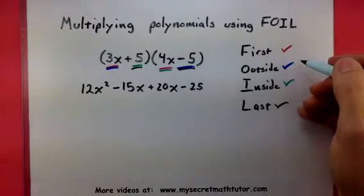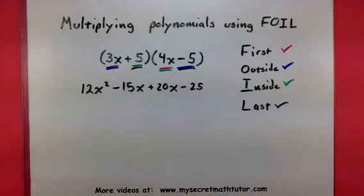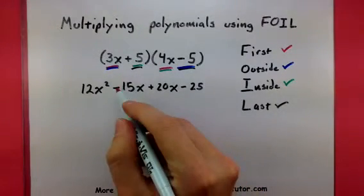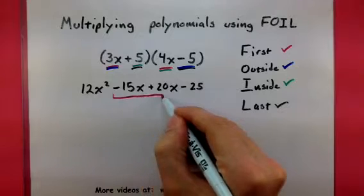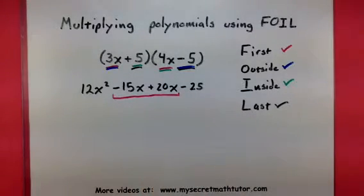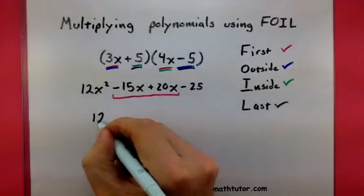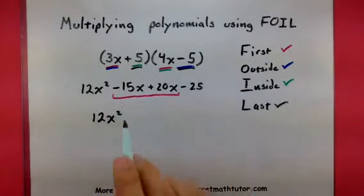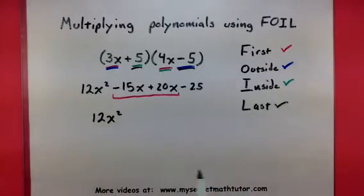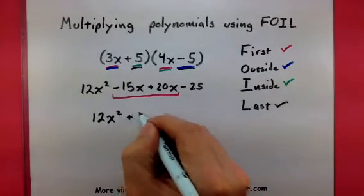Once we've taken care of all of our terms, we need to look at the polynomial and simplify it. Most of the time, the simplifying will come from these two middle terms. We'll probably be able to combine them in some way. And sure enough, this one is no different. So negative 15x plus 20x gives us 5x.